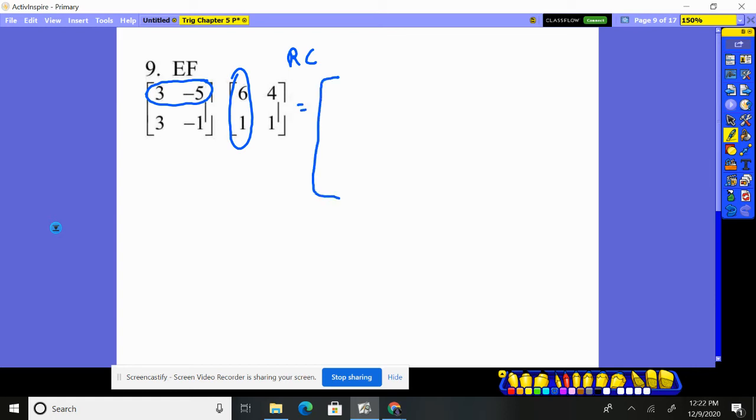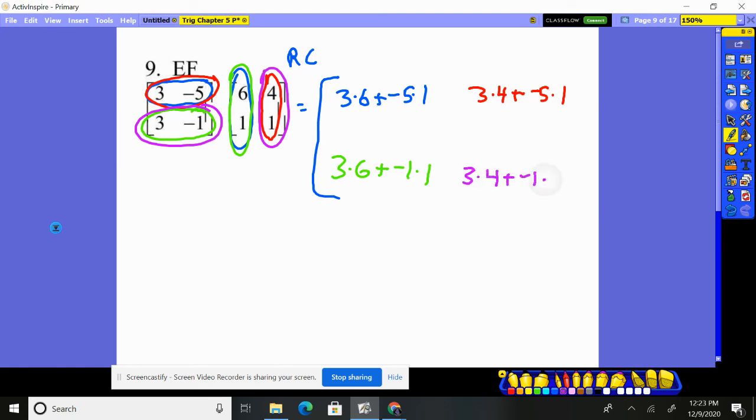Here's what it gives us. I do three times six plus negative five times the one. Now I'm going to continue first row times the next column. So I'm going to have three times the four plus negative five times the one. Now I would continue first row times the next column, but there are no more columns. So I dropped down to the next row and start all over. So I do three times the six plus negative one times the one. And then I continue times the next column, three times four plus negative one times one.